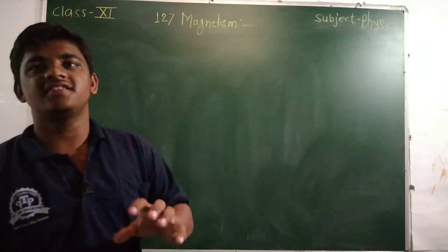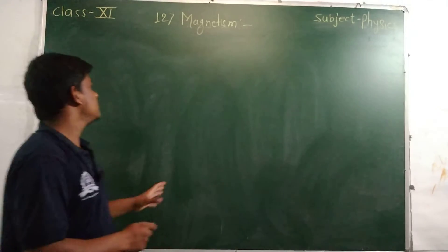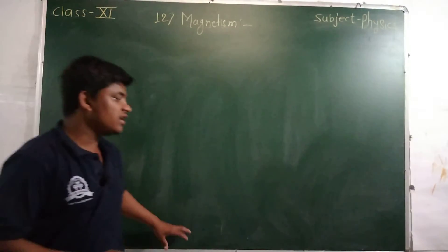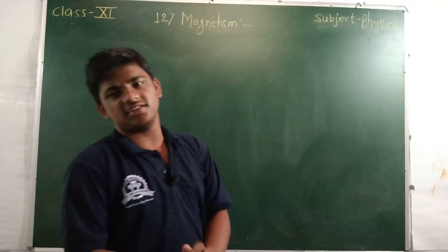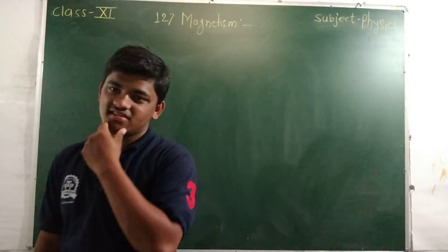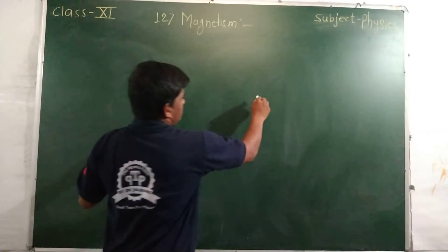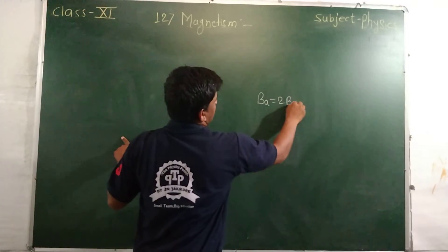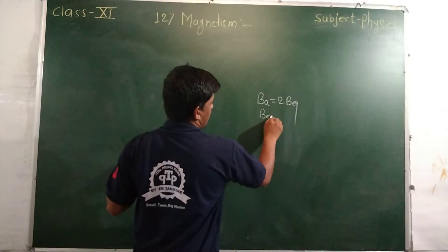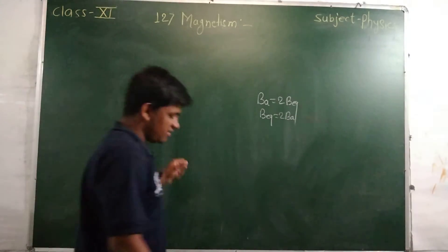Hello, welcome students. In the previous lectures we discussed bar magnets — what are bar magnets, axis, equators, and some different points. There was a mistake in the previous lecture, and also a mistake in the last formula and equations at the end of the lectures. This is not correct; this correction will be made now.